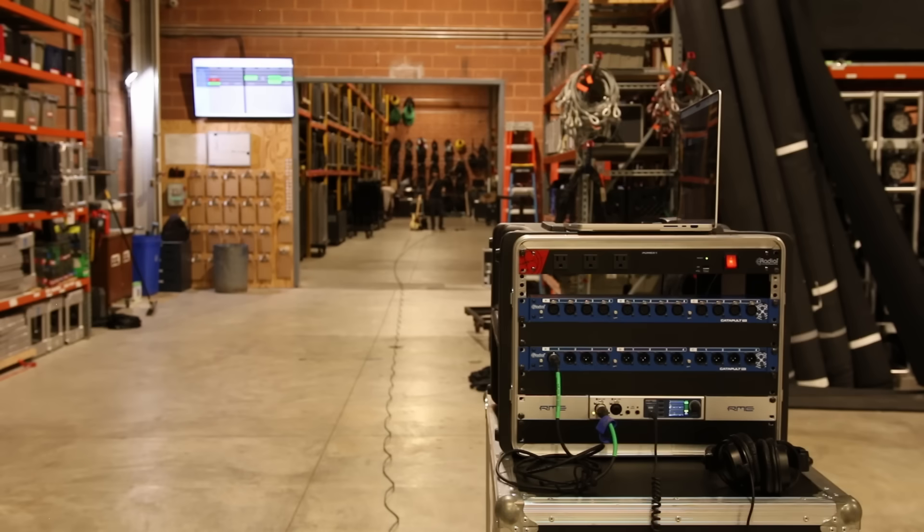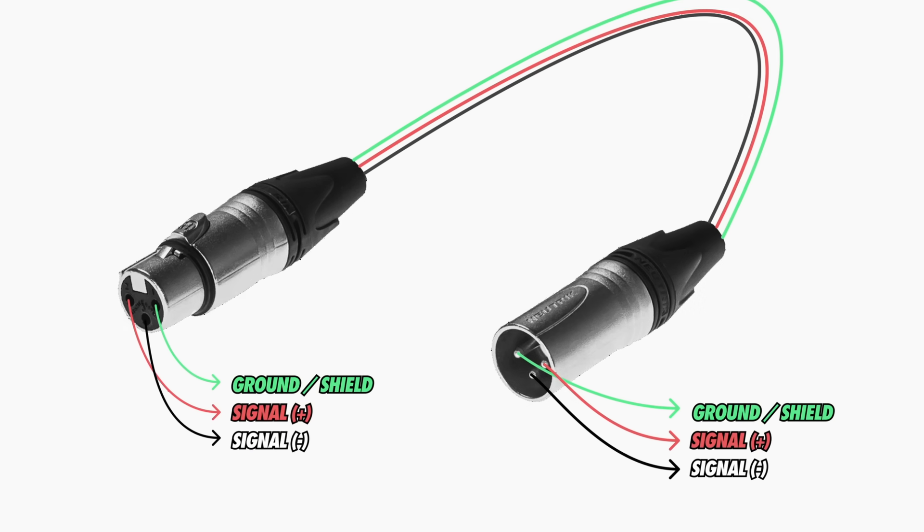But does UTP — unshielded twisted pair — work with a condenser mic? I'll take that as a no. The reason is that phantom power utilizes the shield on an XLR, so we would need to use STP — shielded twisted pair — such as Cat5 shielded cable or higher. The shield of an audio cable provides the reference to ground for phantom power, where the two signal wires each carry plus 48 volts DC. If you're using a shielded twisted pair cable, you just need to make sure that the Ethercon or RJ45 connector provides a connection to the shield within the cable.